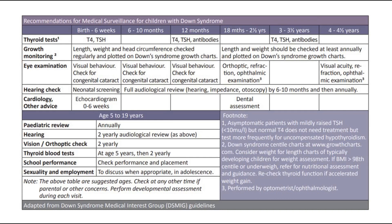After 5 years old, follow-up becomes less regular, with a pediatric review annually, and 2-yearly checkups for hearing and vision, 2-yearly thyroid blood tests, and monitoring of school performance. In adolescence, employment can be discussed when appropriate.